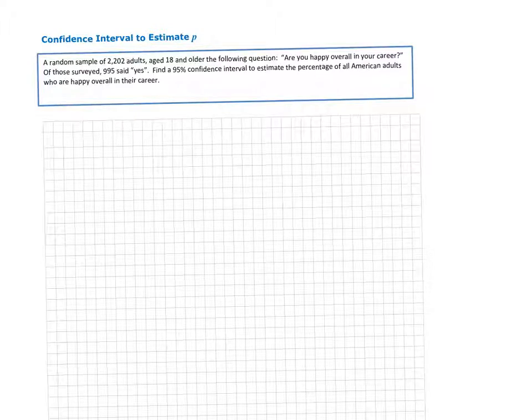We're asked to find a confidence interval at the 95% level to estimate the percentage of all American adults who are happy with their career. To get started, remember that your population is all American adults. This is the group you want to study.